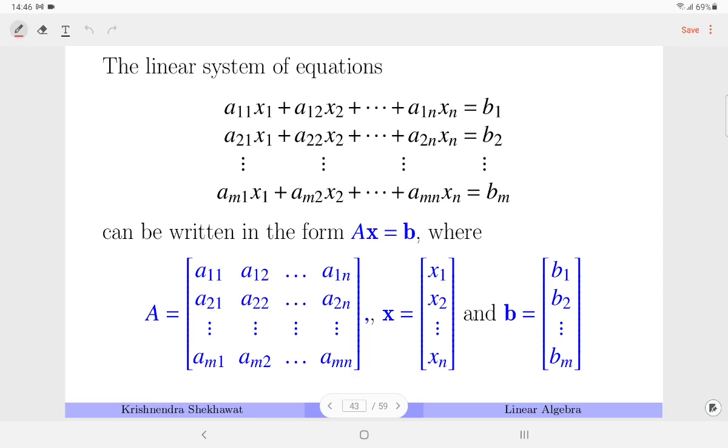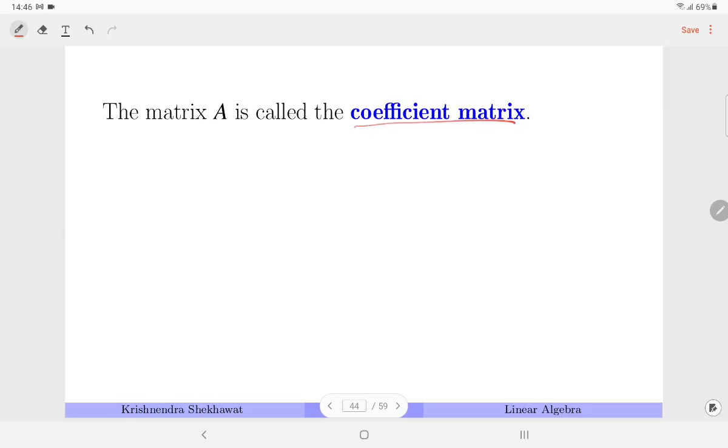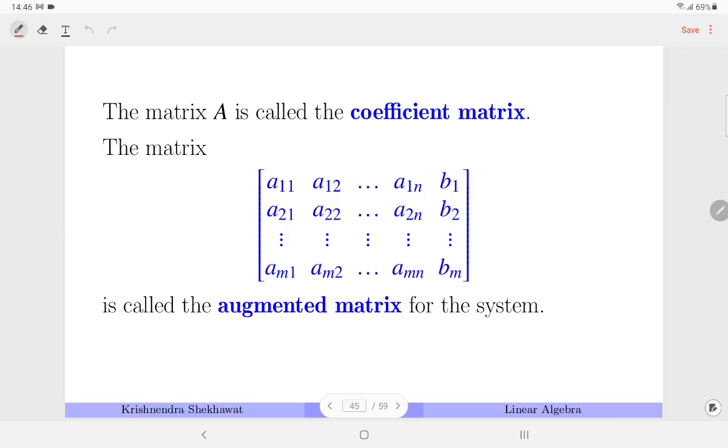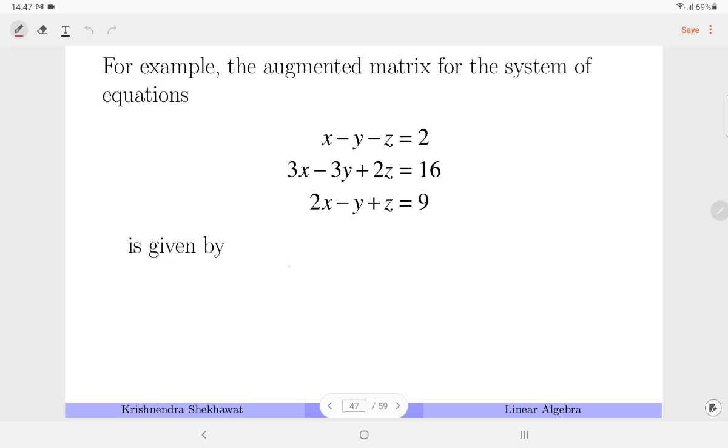The linear system can be represented in matrix form as follows: Ax equals b, where A is the coefficient matrix, x are the variables, and b are the constants on the right hand side. Therefore A is called the coefficient matrix. And A along with this column, we call it the augmented matrix. So very important notation. For example, for this system, the augmented matrix is [1, -1; 3, -3; 2, -1] and [2; 0; 9].